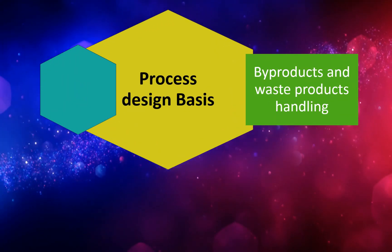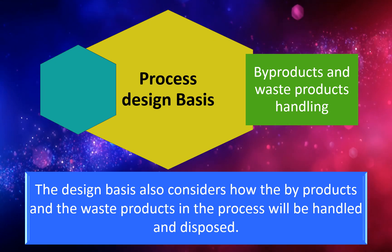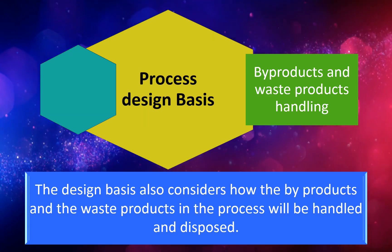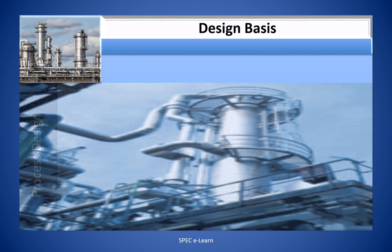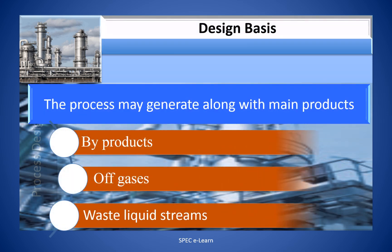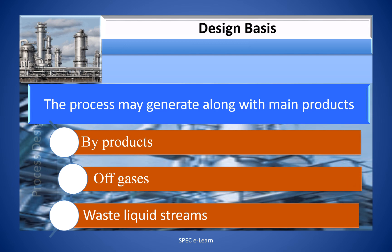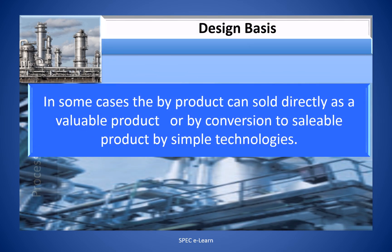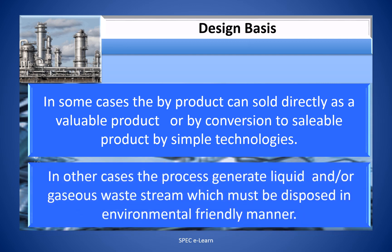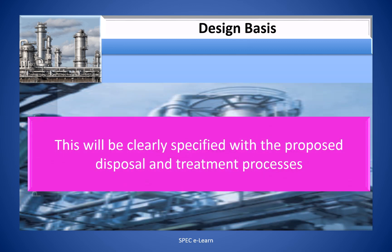By-products and waste products handling: The design basis also considers how the by-products and waste products in the process will be handled and disposed. The process may generate, along with main products, by-products, off-gases, and waste liquid streams. In some cases, the by-product can be sold directly as a valuable product or by conversion to a saleable product using simple technologies. In other cases, the process generates liquid and/or gaseous waste streams which must be disposed of in an environmentally friendly manner, with proposed disposal and treatment processes clearly specified.